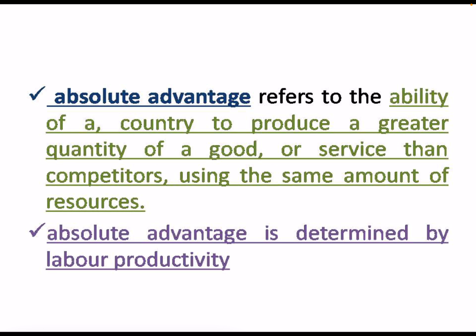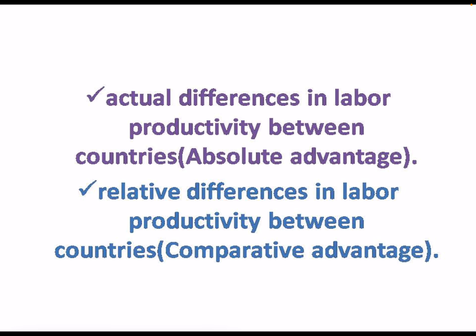Absolute advantage is basically the ability that makes a country produce more quantity of goods and services using the same resources. Absolute advantage is determined on the basis of labor productivity. If we talk about actual difference in labor productivity, that relates to absolute advantage given by Adam Smith. If we talk about relative difference — where one country's labor is more productive relative to another — that is comparative advantage, given by Ricardo, which we will study in the second video.